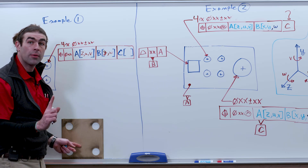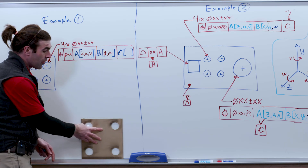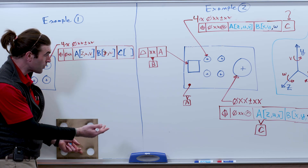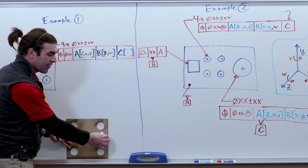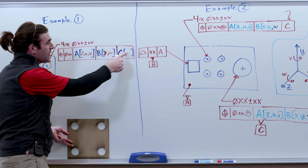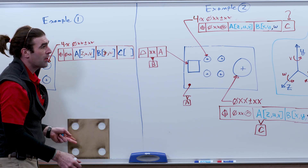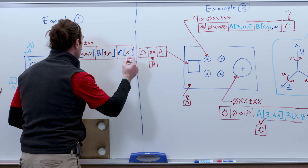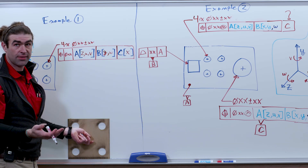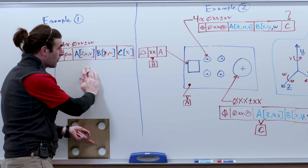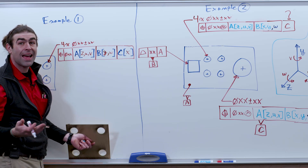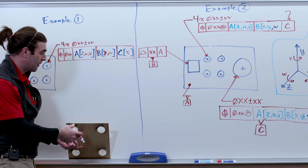Now there's only one more degree of freedom left — the part can still move this way. When we push it up against the angle plate or whatever inspection equipment is used, C is going to take away the final degree of freedom, which is translation in X. So this is just explicit — something that already happens whether you know it or not.